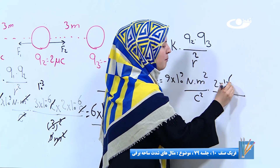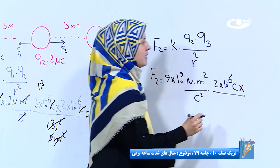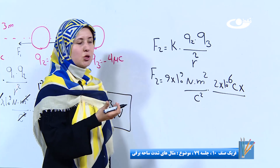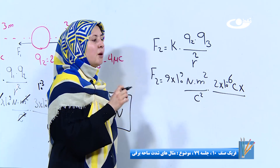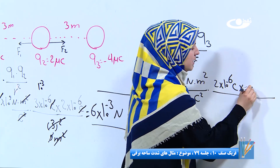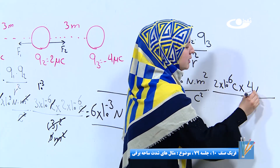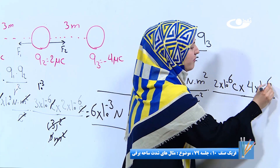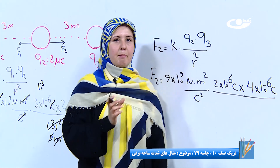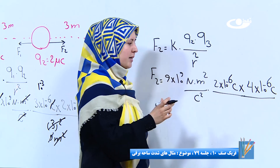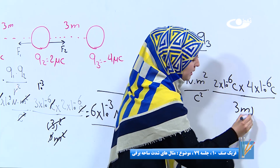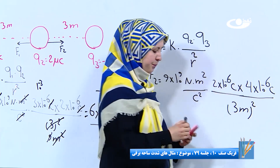دو ضرب ۱۰ به توان منفی ۶ کولمب. ضرب Q3 منفی چهار میکرو کولمب، ما منفی را در نظر نمی‌گیریم، می‌نویسیم چهار ضرب ۱۰ به توان منفی ۶ کولمب. و همچنان فاصله بین هر دو ذره هم سه متره. ما نوشته می‌کنیم سه متر، توان مربع.